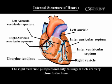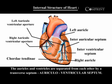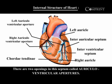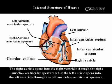The right ventricle pumps blood only to the lungs, which are very close to the heart. The auricles and ventricles are separated from each other by the transverse septum, called the auriculoventricular septum. There are two openings in this septum called auriculoventricular apertures. The right auricle opens into the right ventricle through the right auriculoventricular aperture, while the left auricle opens into the left ventricle through the left auriculoventricular aperture.